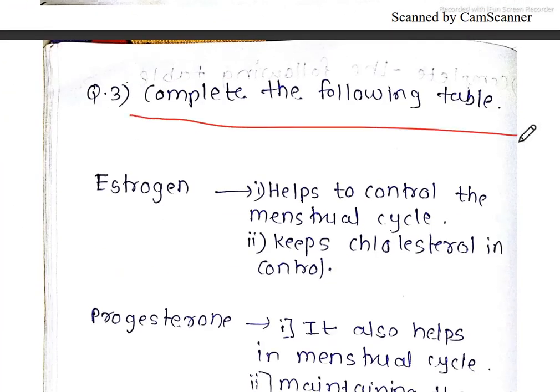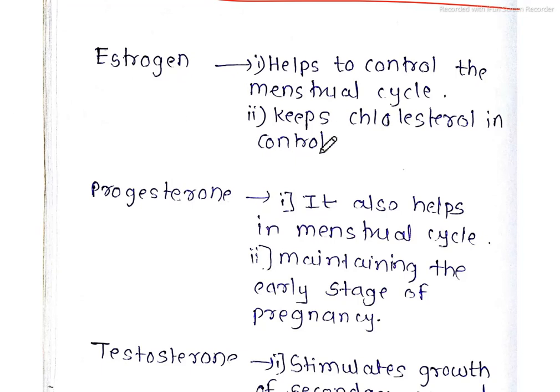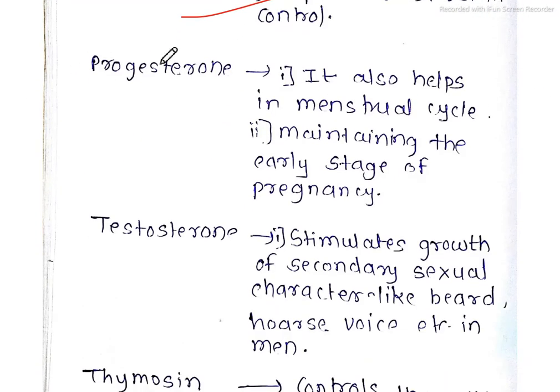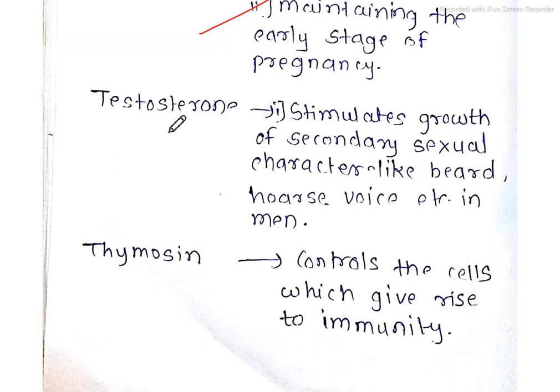Next, complete the following table. Here is the table form, here is handwritten note. First, estrogen helps to control the menstruation cycle and keeps cholesterol in control. Next, progesterone also helps in menstruation cycle and maintains the early stage of pregnancy. Third, testosterone stimulates growth of secondary sexual characters like beard, hoarse voice, etc. in men.